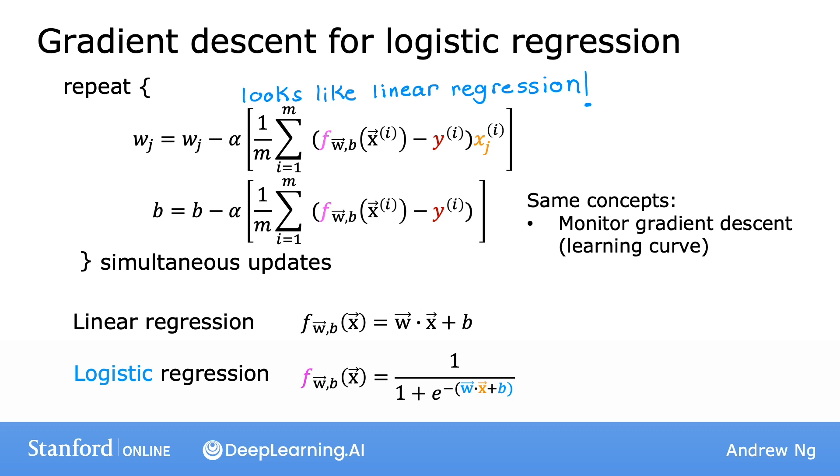I've written out these updates as if you're updating the parameters w_j one parameter at a time. Similar to the discussion on vectorized implementations of linear regression, you can also use vectorization to make gradient descent run faster for logistic regression. I won't dive into the details of the vectorized implementation in this video, but you can also learn more about it and see the code in the optional labs.